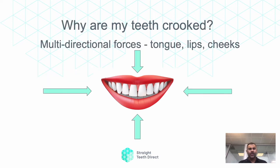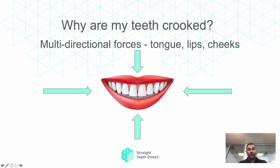So why are teeth crooked? The main issue is that we have forces in our mouth coming from our tongue, our lip, and our cheeks. Think of it like Indiana Jones trapped in a room where the walls and ceiling are compressing on him — our tongue, mouth, and lip muscles are doing the same to our teeth.